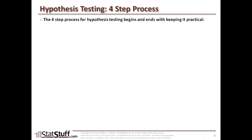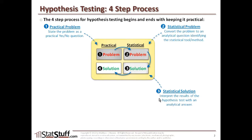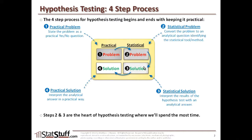Let's review again the four basic steps for doing hypothesis testing. At a high level, we're taking things from practical to statistical and then back to practical again. We start off with defining the practical problem as a simple yes or no question, then converting that to an analytical question where we identify the statistical tool or method to use. Then we apply that tool and interpret the results to come to a statistical solution, and finally interpret that into a practical solution. Steps two and three are the heart of hypothesis testing.